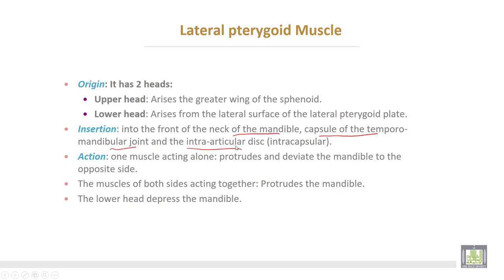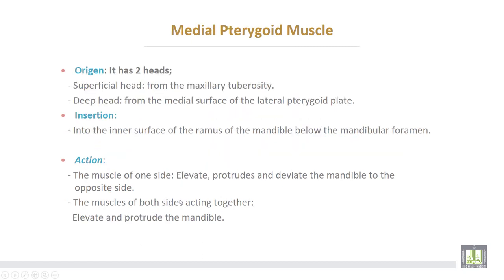Action of the lateral pterygoid: for one muscle on one side acting alone, it protrudes the mandibular joint. The muscles of both sides acting together protrude the mandible. The lower head of the lateral pterygoid can also depress the mandible.